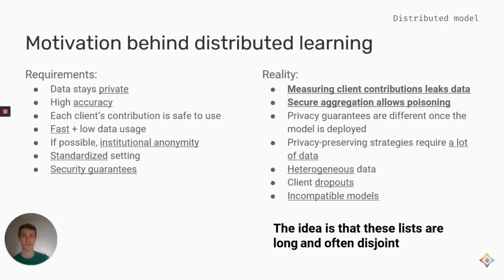As you can see, there is a very strong motivation behind distributed learning. There are a large number of requirements, such as data has to stay private, the model has to have high utility, potentially institutional anonymity, standardized learning settings, etc. However, when we meet reality, it's very difficult to obtain all of these, primarily because increasing the utility of the model can come at the cost of user privacy, and vice versa.